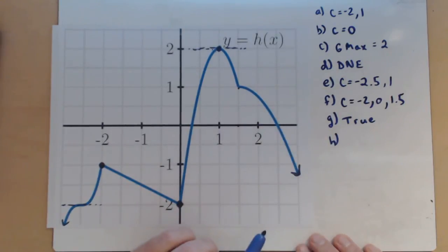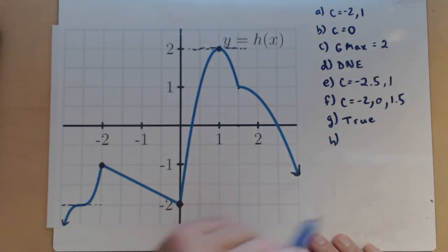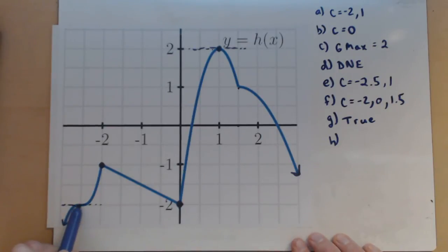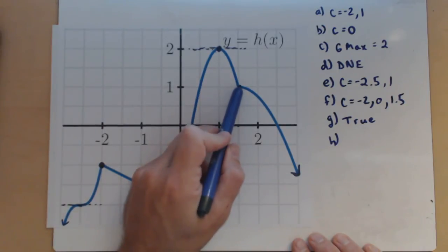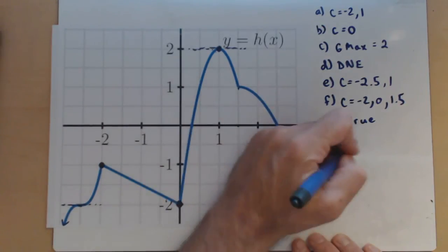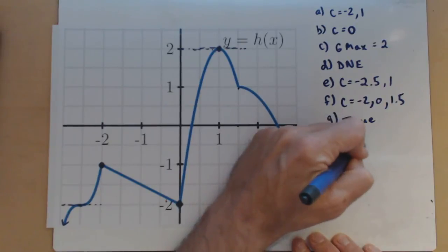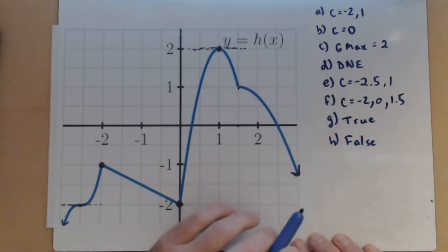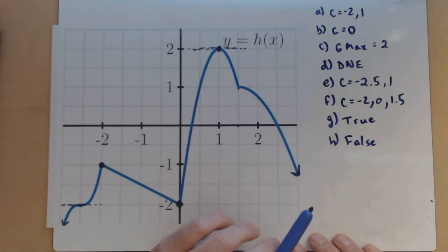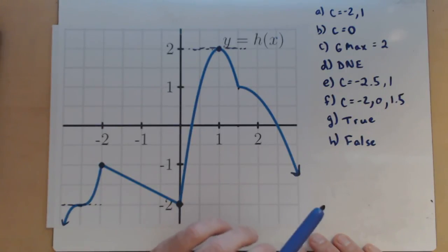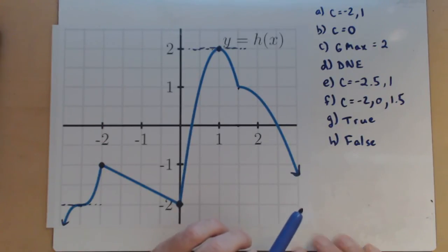H: true or false — at every point where h prime of c is 0 or does not exist, h has a relative maximum or minimum. Well, the derivative was 0 right here and it was neither a max nor a min. The derivative didn't exist right here — also neither a max nor a min. So that's going to be false. Just because the derivative is 0 or does not exist does not mean we have a local max or local min. We saw that the reverse is true: if we have a local max or a local min, then the derivative is either not going to exist at that point or be 0.